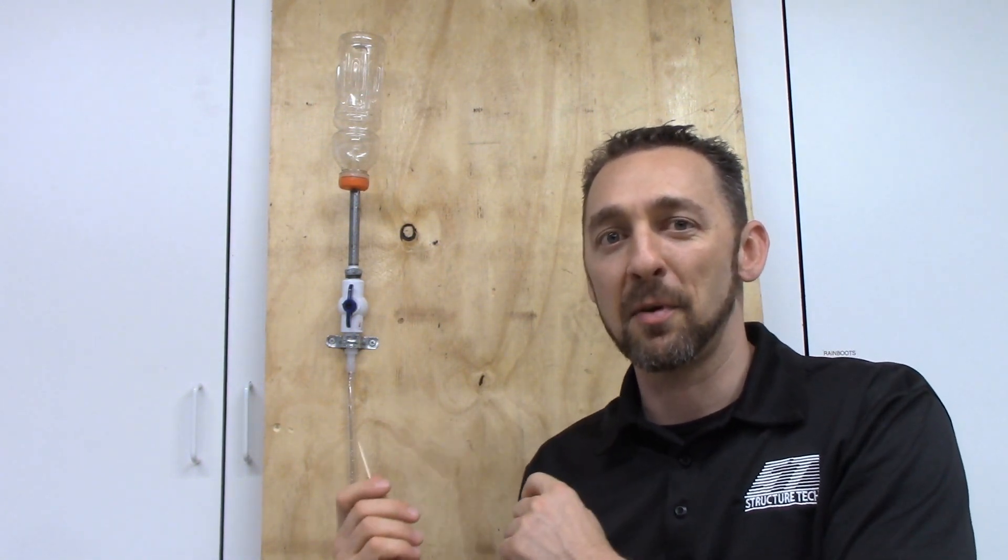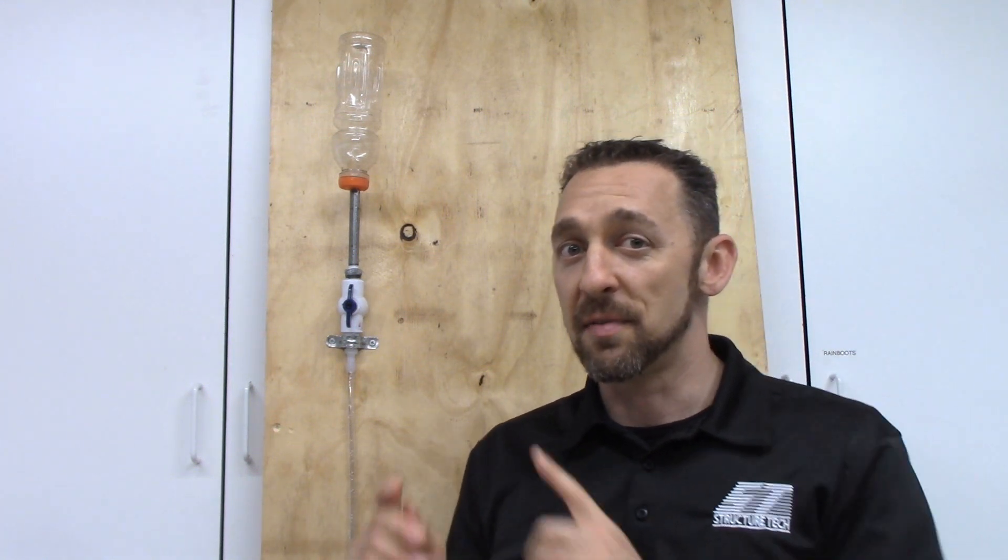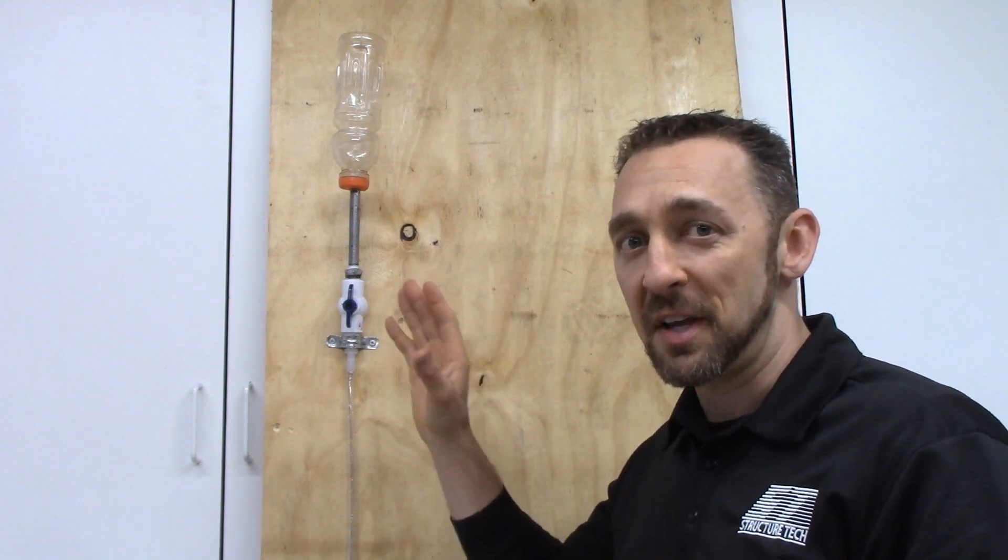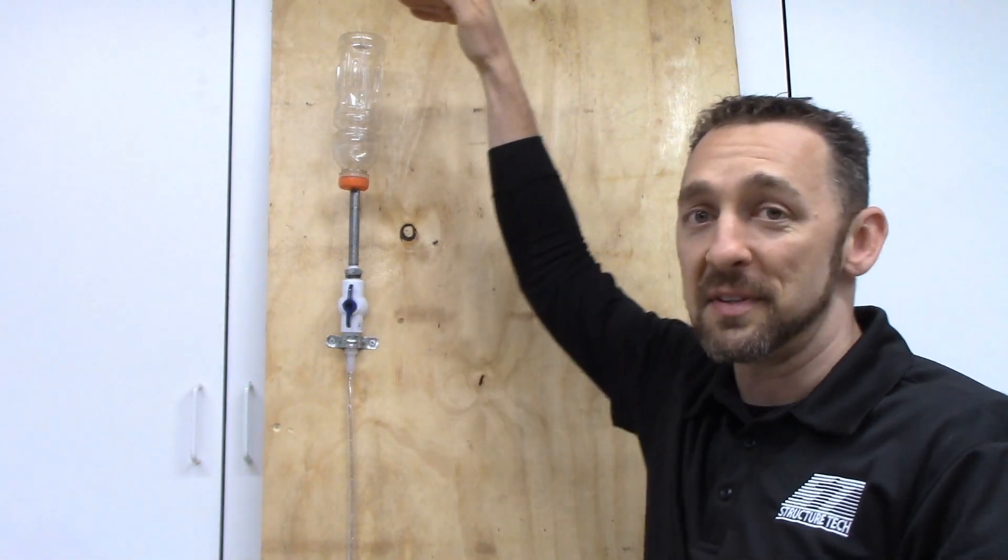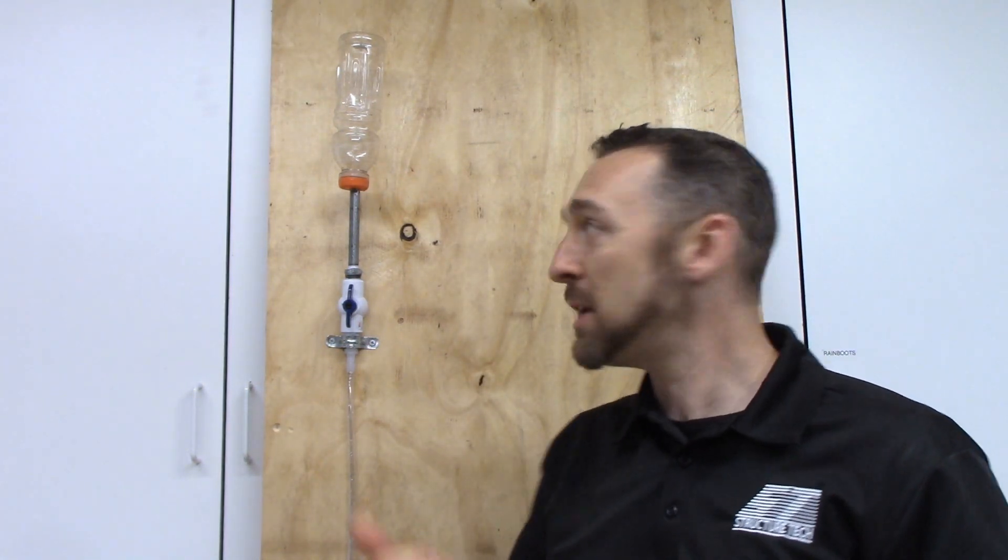It's a nice demonstration, but the problem here is that this is not an accurate representation of a plumbing system or a plumbing fixture. If this water bottle were a sink, it would be wide open at the top. So to do an accurate demonstration, I would need to replace this sealed bottle with a bottle that's wide open.